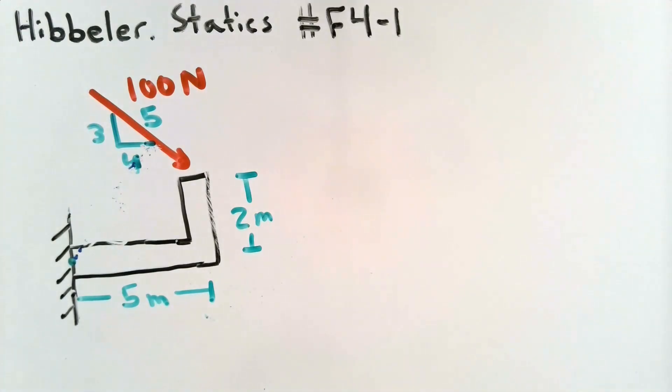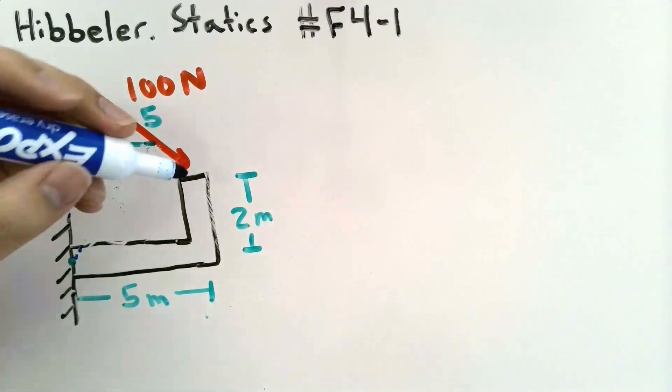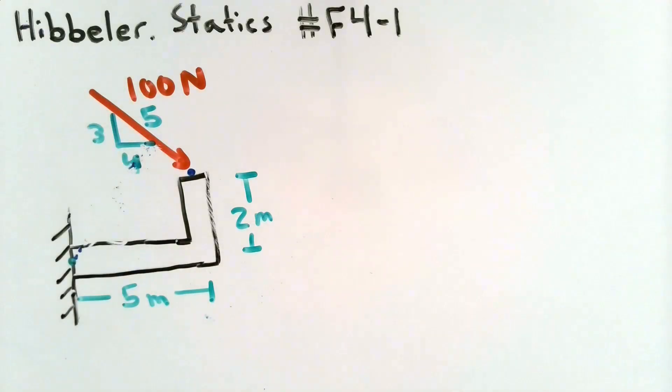Instead of trying to find the distance from my point to the line of action of the force, I'm going to break down my force into its X and Y components. Because finding distances from the point to the line of action of the X and the Y components will be easier. In this case, my 100 N force is acting on this point. That means that my X and my Y components of the force will also act on that point.